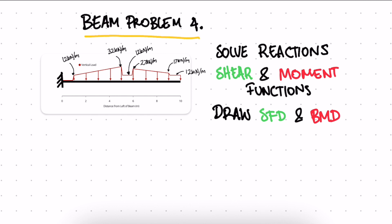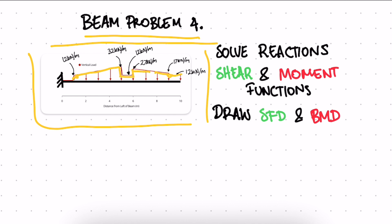Welcome to the fourth beam problem. We have a cantilever beam with multiple loads that change at different points throughout the beam — not a single linear or point load. We're going to break this down into three videos: the first covers the reactions, the second covers the shear and moment functions, and the third covers the shear force and bending moment diagrams.